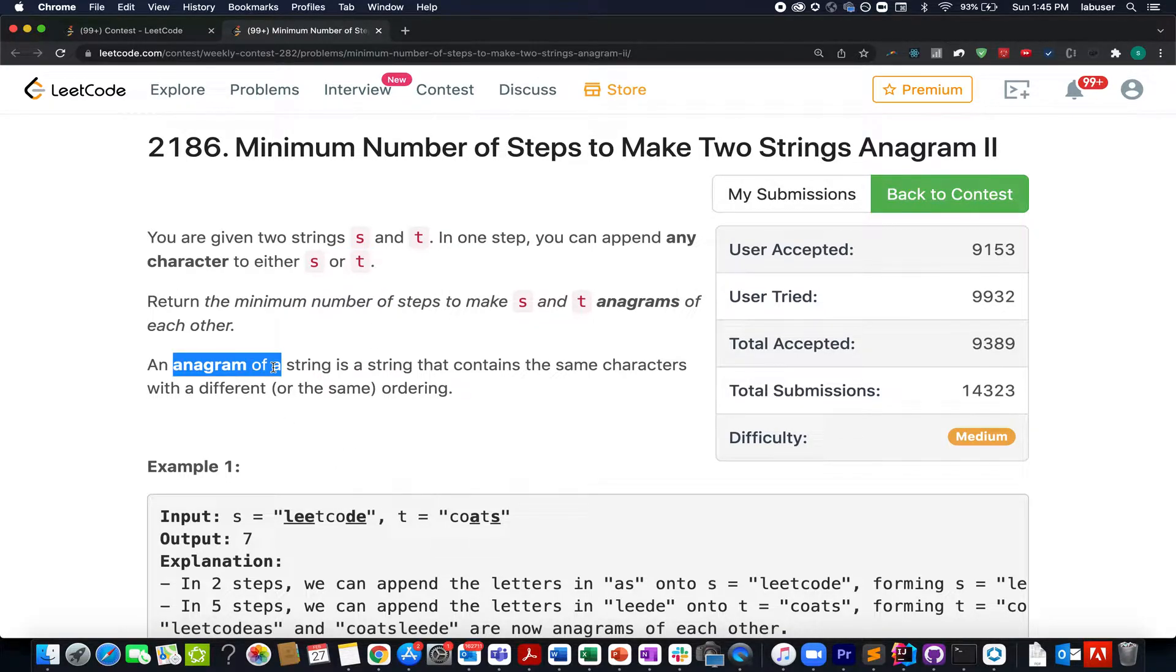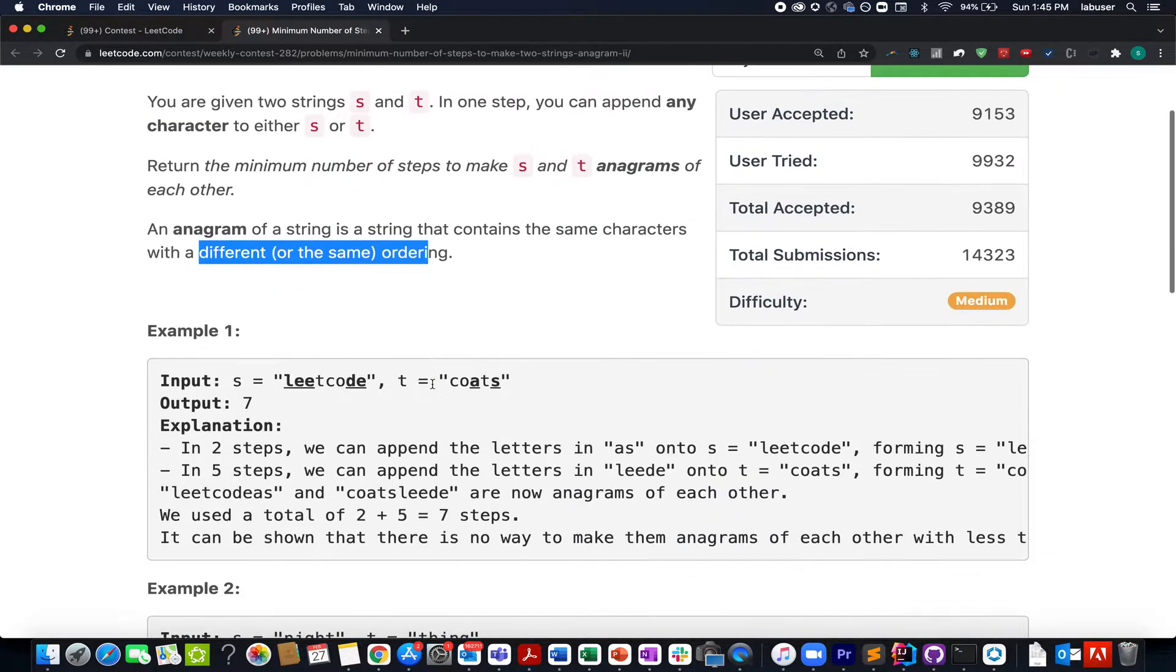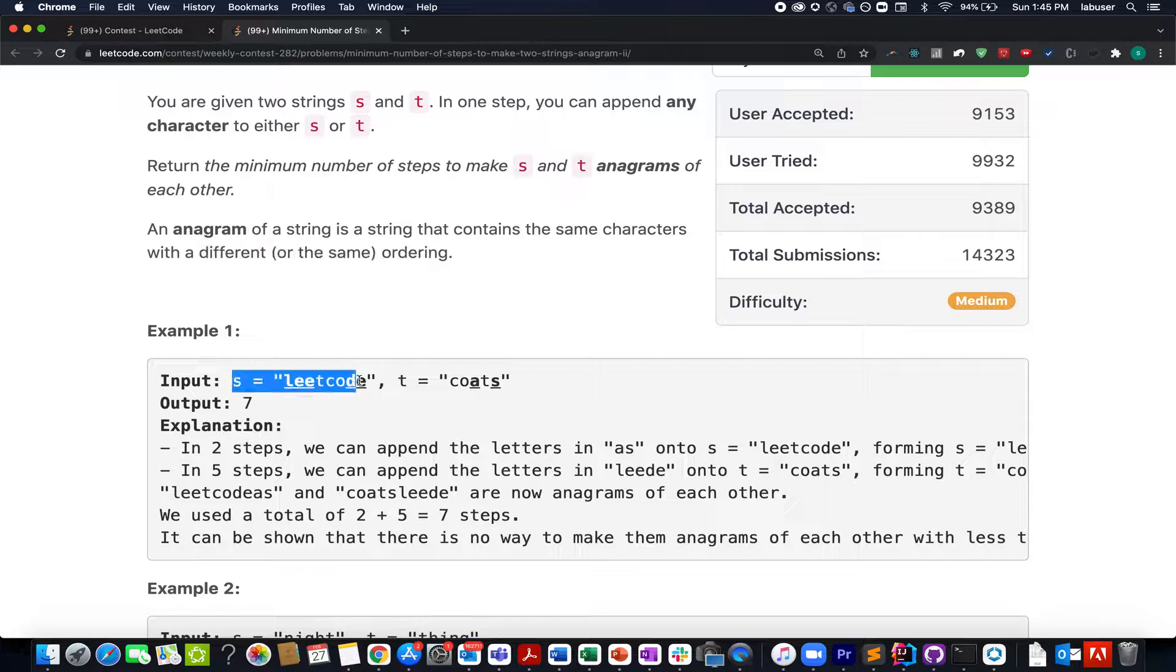We already know what is an anagram: an anagram is a string that contains the same set of characters with different ordering. Here in this example they have provided us with "leetcode" as string s and string t happens to be "coats". The output for this comes out to be 7. I'll be walking through this example as well as the algorithm to go about it by the presentation.